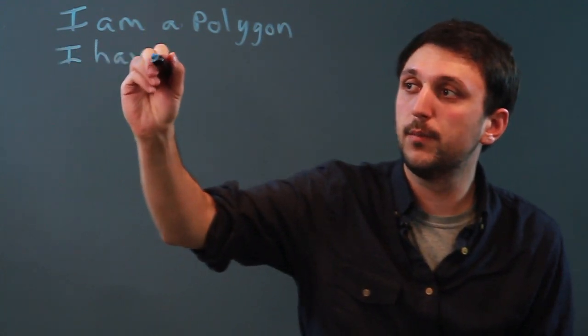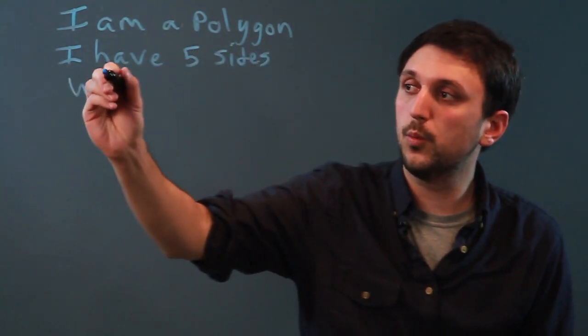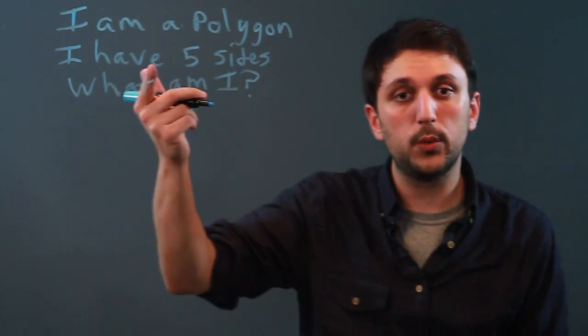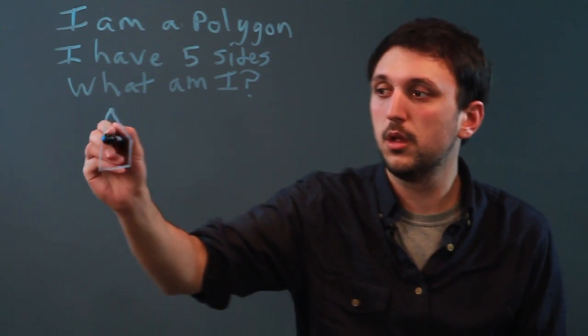I have five sides. What am I? Well, what do we call a five-sided polygon? A pentagon.